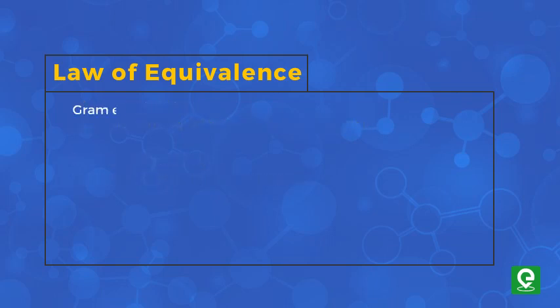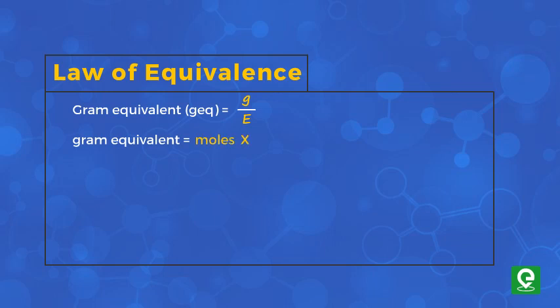Gram-equivalent is equal to the mass of a chemical entity divided by its equivalent weight. It can also be calculated by multiplying the number of moles of a chemical entity by its valence factor.